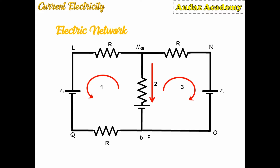The second terminology is a loop. A closed conducting path in an electric network is called a loop. In our case, if we start from point L, then L, Q, P, M and again L will give us one single loop.